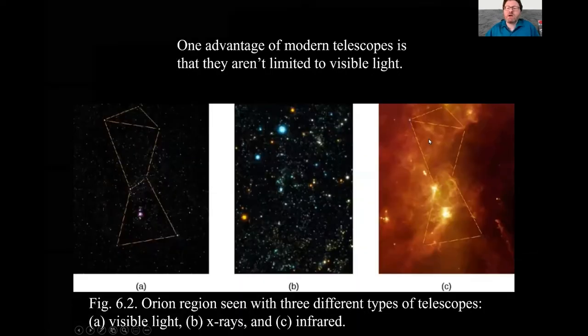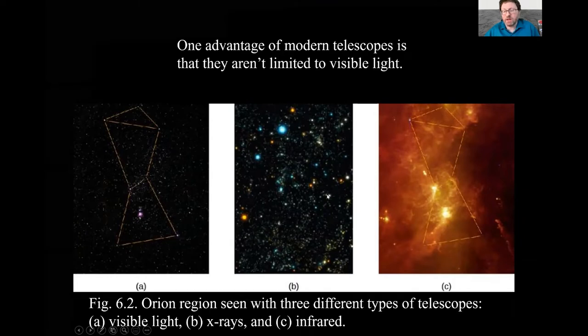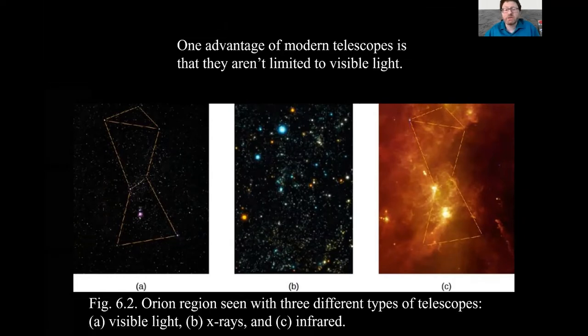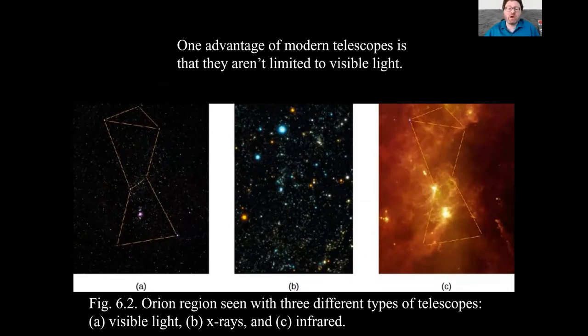One advantage of modern telescopes is that they are not limited to just visible light. Here are different images of the Orion constellation in the visible on the left, in X-ray in the middle, in the infrared on the right. They look quite different from one another. We are able to learn different things by looking at the sky in different wavelengths.